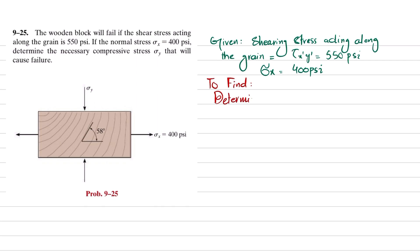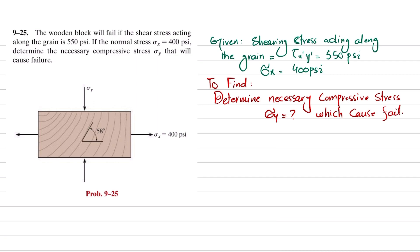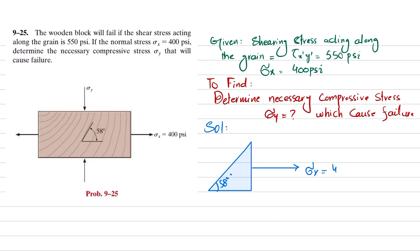We need to determine the necessary compressive stress sigma_y which causes failure. Also note that the grain angle is 58 degrees. Drawing the element, the grain runs at 58 degrees.